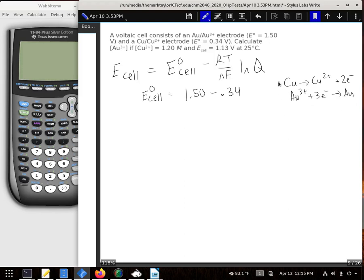So our overall equation, we'll multiply everything up here by three and everything here by two. We're going to have three copper solids and two gold ions, giving us three copper ions and two golds. That's going to help us get our Q for this next step.